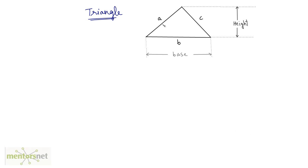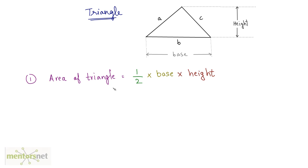This is a triangle with sides A, B and C, and we have been given the height of this triangle as well as the length of the base. The first formula to calculate the area of a triangle is very easy: area of a triangle is equal to half into base into height, if you have been given the base and the height.